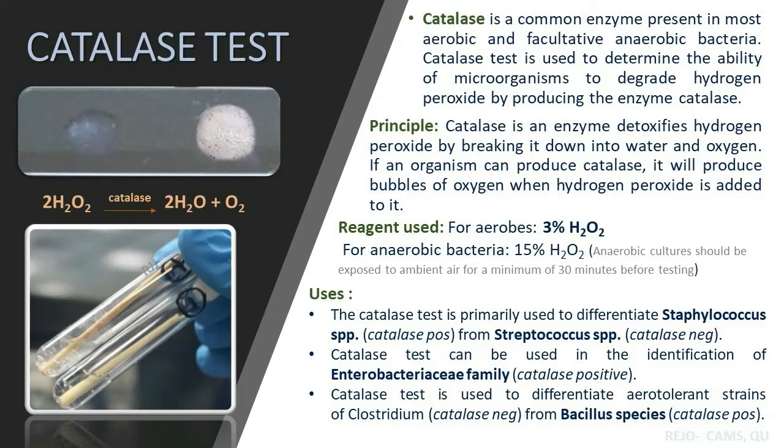The principle of the catalase test is that catalase is an enzyme that detoxifies hydrogen peroxide by breaking it down into water and oxygen. If an organism can produce catalase, it will produce bubbles of oxygen when hydrogen peroxide is added to it.